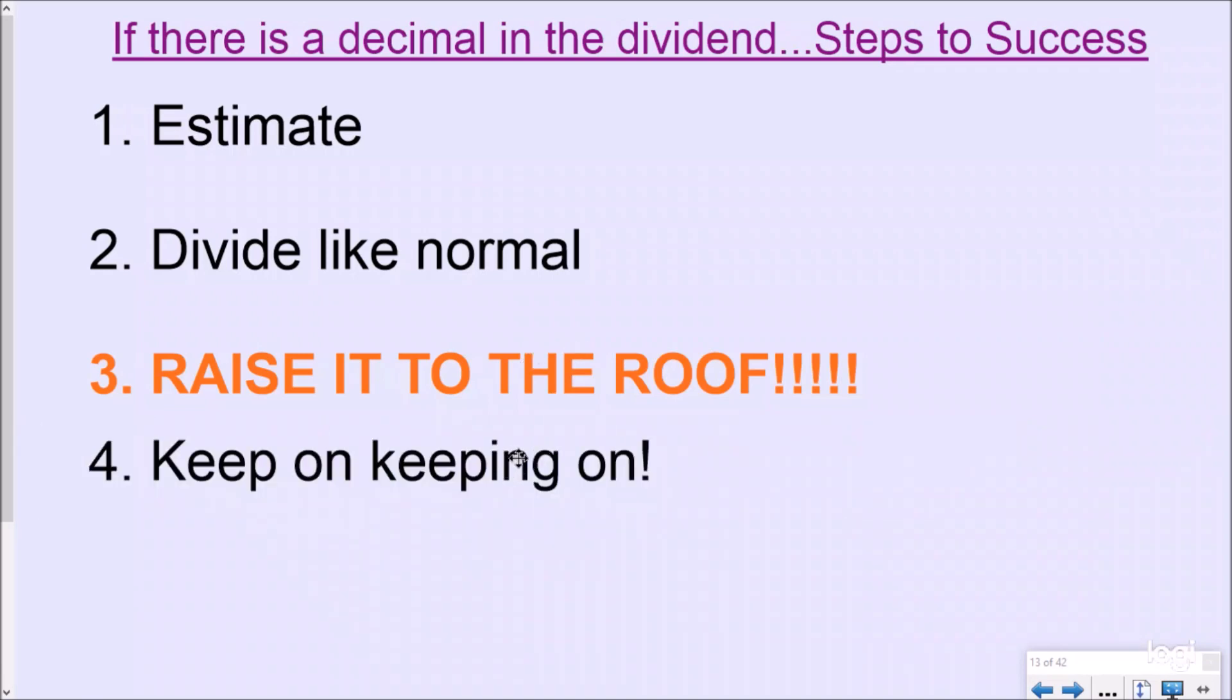And then step number four, you're going to keep on keeping on. What that means is you just keep dividing. And so this is really important when you get to remainders and writing remainders as decimals. Then as always, you want to check to make sure that your answer is reasonable using the estimate you had in your head.